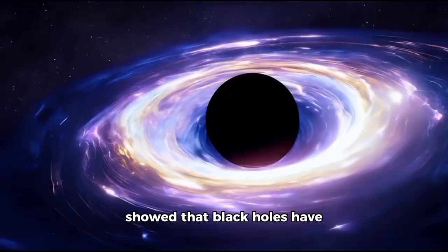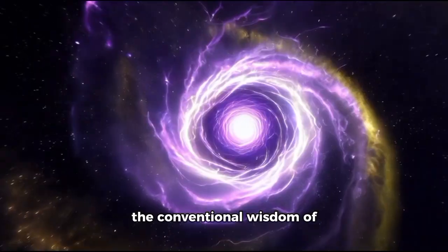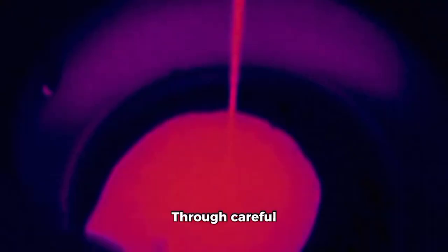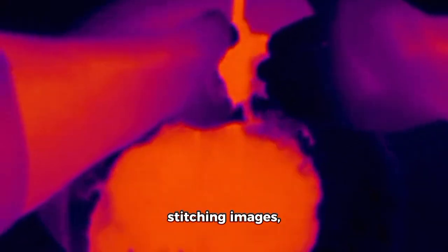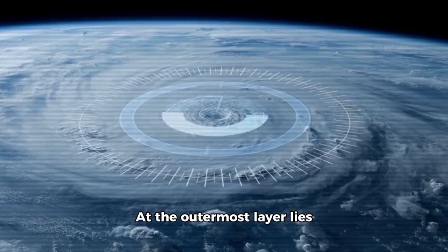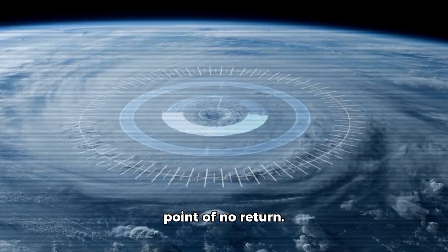The visual information showed that black holes have complex layers, challenging the conventional wisdom of them as solitary entities of pure nothingness. Through careful investigation and stitching images, scientists uncovered three distinct layers inside a black hole. At the outermost layer lies the crucial event horizon, the boundary marking the point of no return.